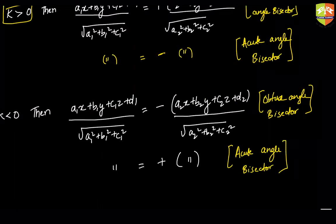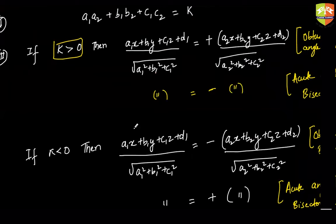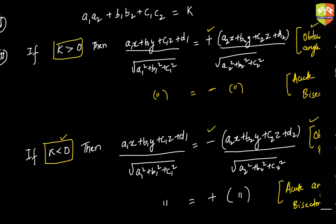How do I remember this? I have a mnemonic: positive k means the positive sign gives the obtuse bisector; negative k means the negative sign gives the obtuse bisector. So whatever the sign of k, the same sign is used for the obtuse angle bisector. k positive → positive sign for obtuse; k negative → negative sign for obtuse.